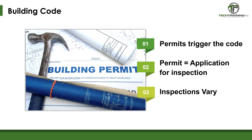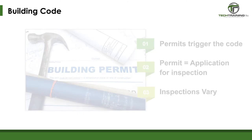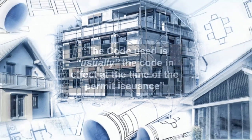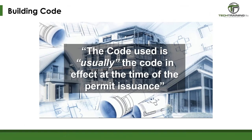Many people don't realize that a permit is defined as an application for inspections. The actual forms and applications for permits may vary, but the process remains the same. Once the permit is pulled, the inspections are triggered. The applicable code is usually the one in place when the permit is pulled. If the code changes during construction, the constructor builds to the code that was in place at the time the permit was pulled. In Massachusetts, construction must begin within 180 days after the permit has been pulled.